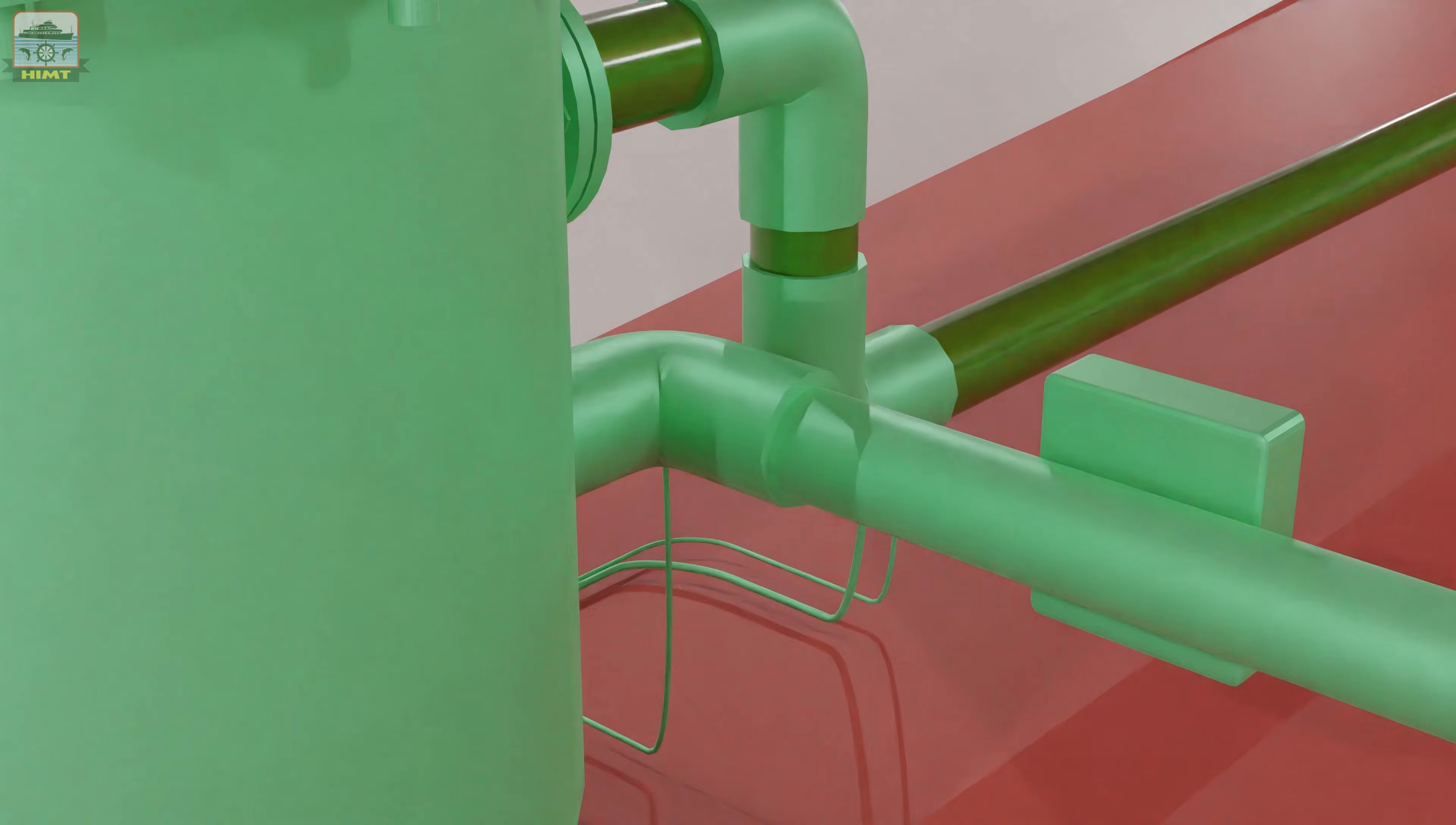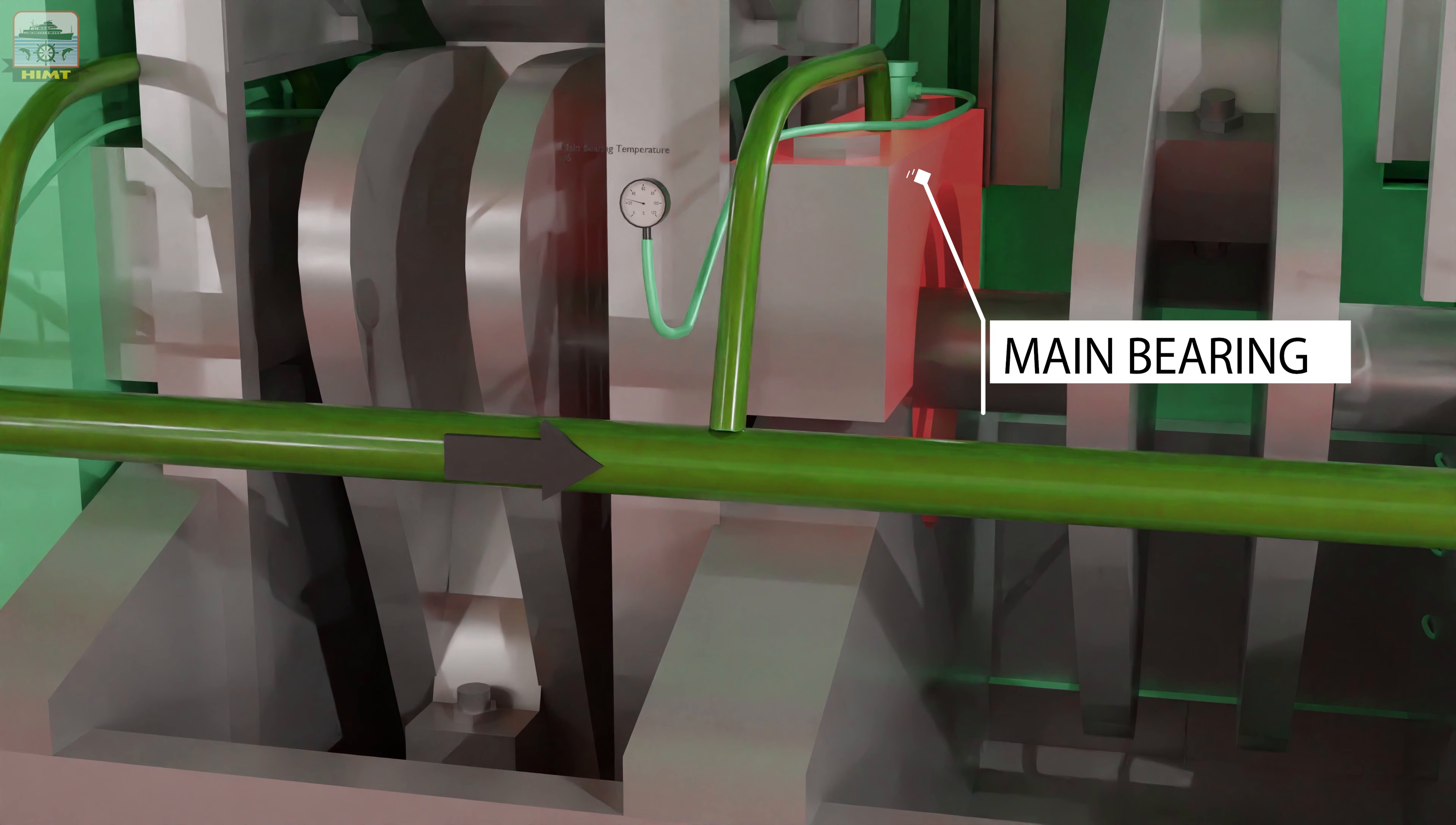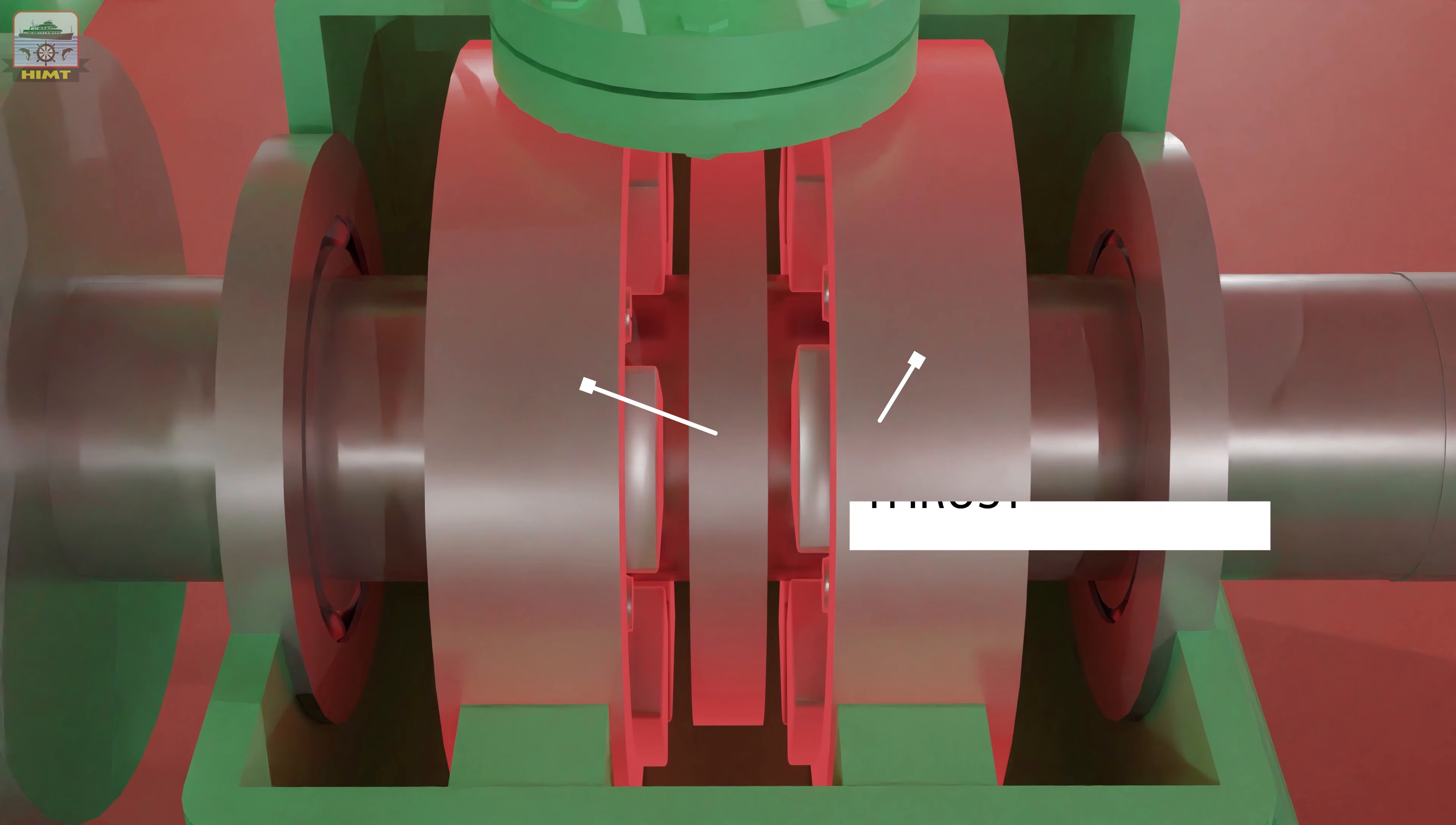After the back flushing filter, the lube oil enters two manifolds. One manifold supplies oil to the main bearings, the chain case, and the thrust bearing.